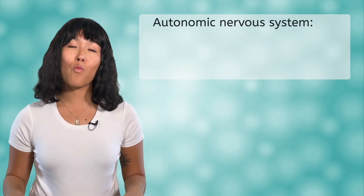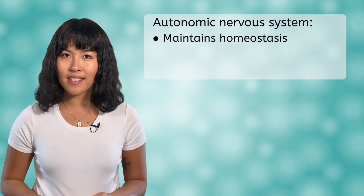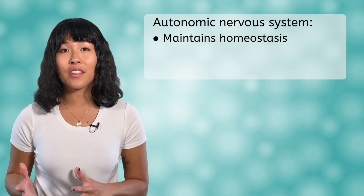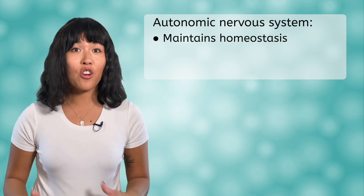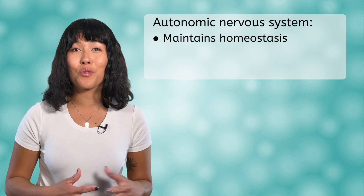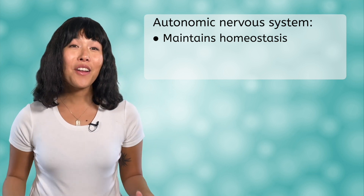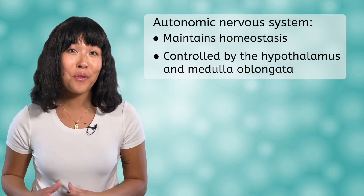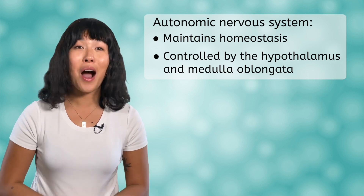The autonomic nervous system is just like its name implies — it is automatic or involuntary control. This part of your nervous system works to maintain homeostasis by stimulating or inhibiting glands to secrete hormones, your heart rate, and your smooth muscles. The autonomic nervous system is controlled by the hypothalamus and the medulla oblongata.